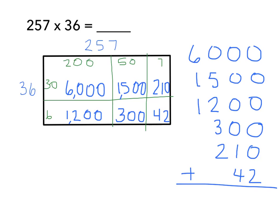So I put 6,000, 1,500, 1,200, 300, 210, 42. Sometimes I like to put the numbers in order from greatest to least to make it easier for me to add.